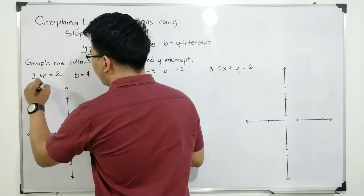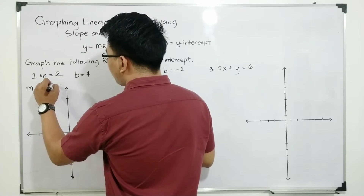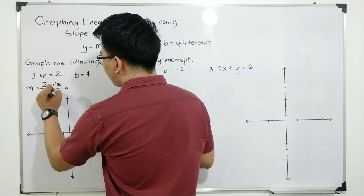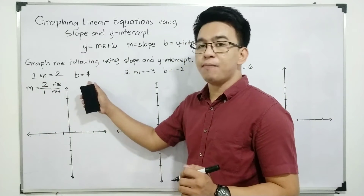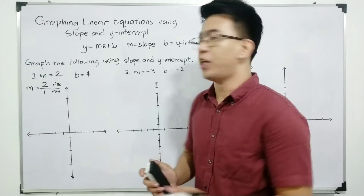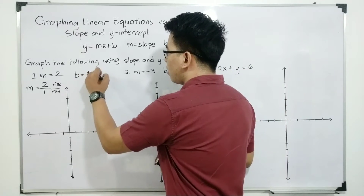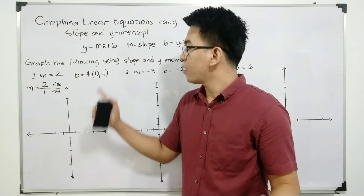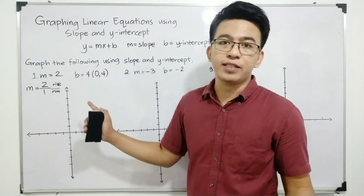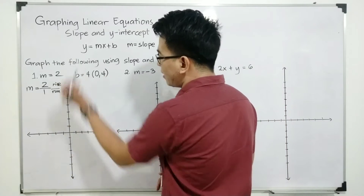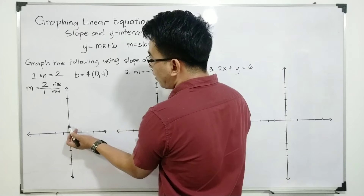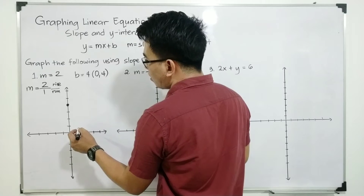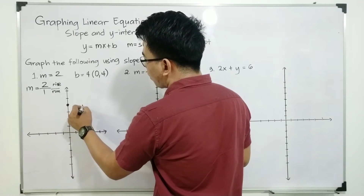Your m is equal to 2 over 1, wherein your numerator is your rise and your denominator is the run. As for the y-intercept, which is 4, the coordinates of this point are (0, 4). So we can start graphing the linear equation. First, let us start with the y-intercept. The y-intercept is along the y-axis — positive 1, 2, 3, and 4. This is your y-intercept, (0, 4).